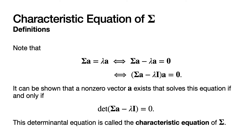Note that the equality CAP-SIG times A equal to lambda times A holds if and only if CAP-SIG times A minus lambda A equals the zero vector, and in turn that holds if and only if the quantity (CAP-SIG minus lambda times the identity matrix) times the vector A equals the zero vector. It can be shown that a non-zero vector A exists that solves this equation if and only if the determinant of (CAP-SIG minus lambda times the appropriately sized identity matrix) is equal to zero. This equation involving the determinant is called the characteristic equation of the P by P matrix CAP-SIG.